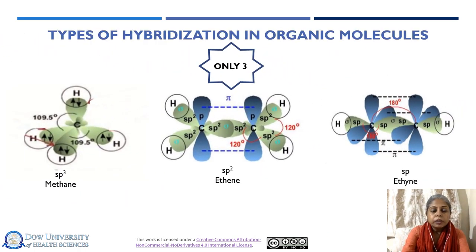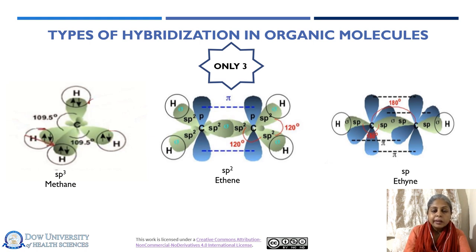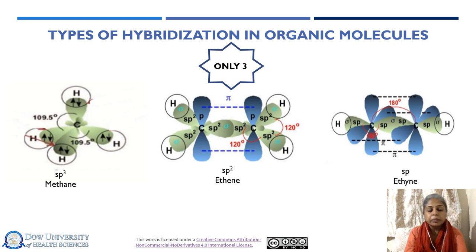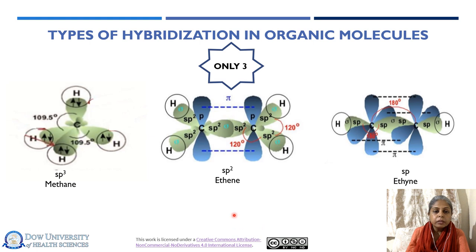Nature has restricted carbon to form only three types of hybridization. Carbon can acquire sp3 hybridization, as shown in the example of methane. Carbon can acquire sp2 hybridization, as shown in ethene. Carbon can also acquire sp hybridization, as shown in ethyne. These are the only three different types of hybridization found in all organic molecules with regard to carbon atoms.